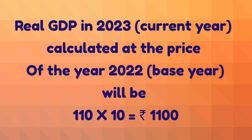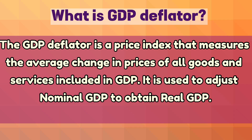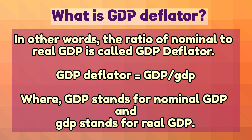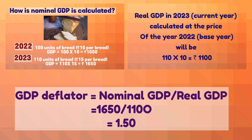The ratio of nominal GDP to real GDP gives us an idea of how prices have changed from the base year to the current year. GDP deflator is a price index that measures the average change in prices of all goods and services included in GDP. It is used to adjust nominal GDP to obtain real GDP. So GDP deflator equals nominal GDP divided by real GDP.